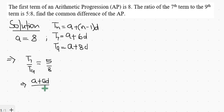We are given the first term a as 8, so by substitution we have this as 8 plus 6d divided by 8 plus 8d, and that will be equal to 5 over 8.